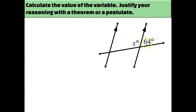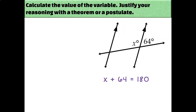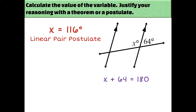This is another example where one of the lines doesn't even matter. This parallel line doesn't have anything to do with our two labeled angles, because these are just a linear pair. We already knew how to calculate those before we started this unit. We know that linear pairs are supplementary and add up to 180. So the equation is x plus 64 equals 180, and x must be 116 degrees by the linear pair postulate.